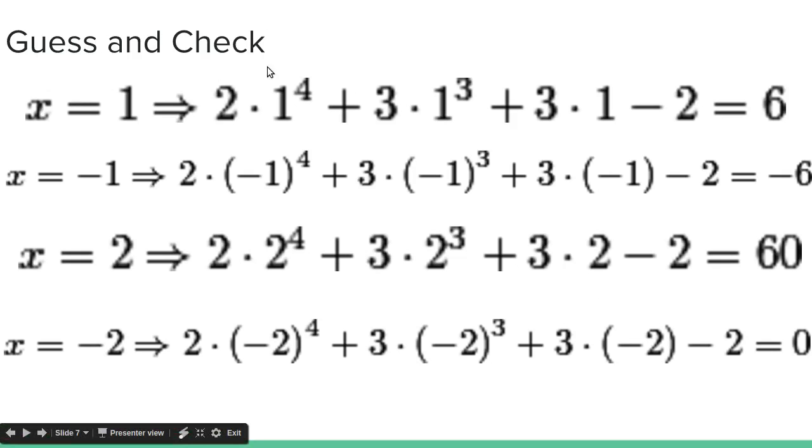So we guess x equals 1, that gives us 6, so it's not an answer. We guess x equals negative 1, that gives us negative 6, so it's not an answer. We guess x equals 2, that gives us 60, so it's not an answer. But if we guess x equals negative 2, then we get 0. So x equals negative 2 is a zero.